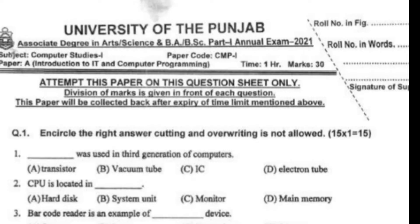IC — integrated circuit — was used in the third generation of computers. CPU is located in the system unit.